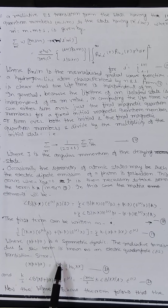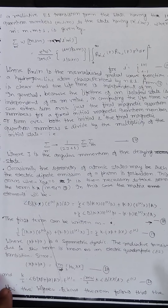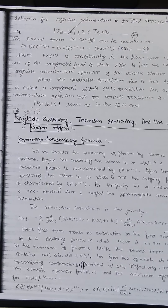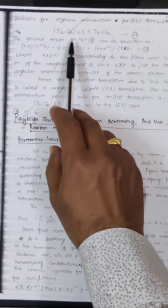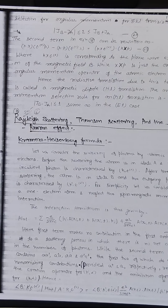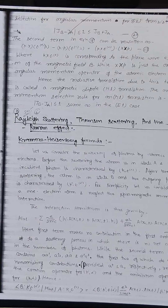Since (xp + px) = (iм/ℏ)[H₀, xx], we have (k/2)·⟨b| (xp + px) |a⟩·ε_α = -(iмω/2) k·⟨b|xx|a⟩·ε_α. The Wigner-Eckart theorem gives the angular momentum selection rule for E2 transitions: |j_b - j_a| ≤ 2, and |j_b - j_a| ≤ j_b + j_a. The second term can be written as: (k·x)(ε_α·p) - (k·p)(ε_α·x) = (k × ε_α)·(x × p), where (k × ε_α) corresponds to the plane-wave expansion of the magnetic field B, while (x × p) is the orbital angular momentum operator of the atomic electron.